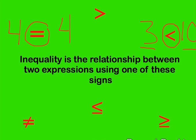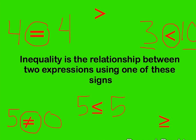Not equal to — we could say 5 is not equal to 0, so this sign shows us the relationship between 5 and 0. The less than or equal to and the greater than or equal to signs are interesting because it could look like 5 is equal to 5, but also 3 is less than 5. So these signs can be used when things are equal or when one side of the expression is less than or greater than the other side.